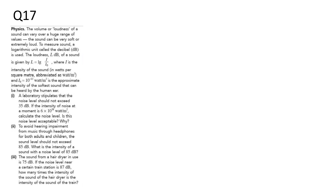Now we are dealing with sound. I represents the intensity of sound, measured in watts per square meter. The initial reference intensity I₀ is 10 to the power of negative 12 watts per meter squared, which is the approximate intensity of the softest audible sound.